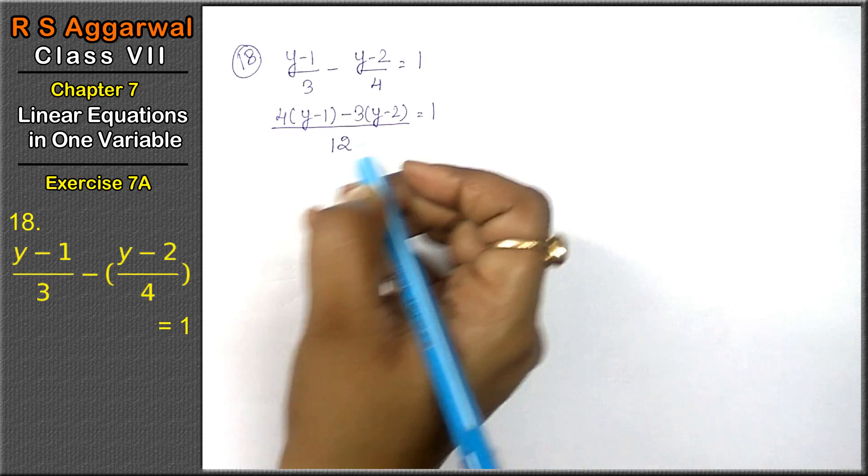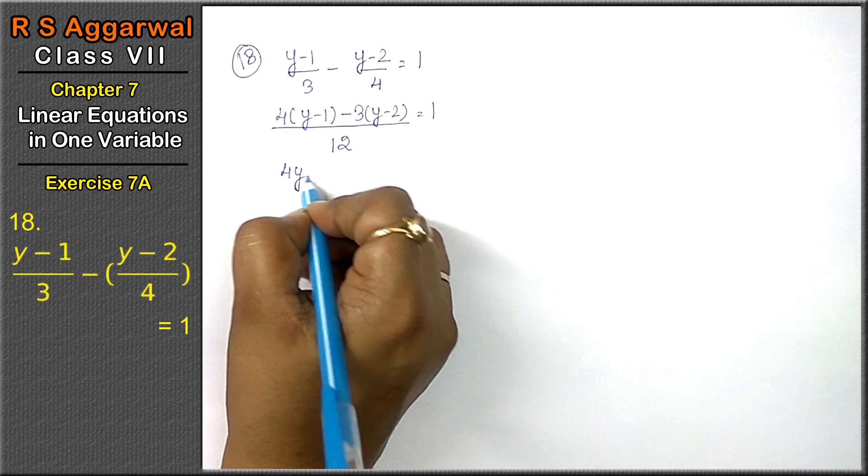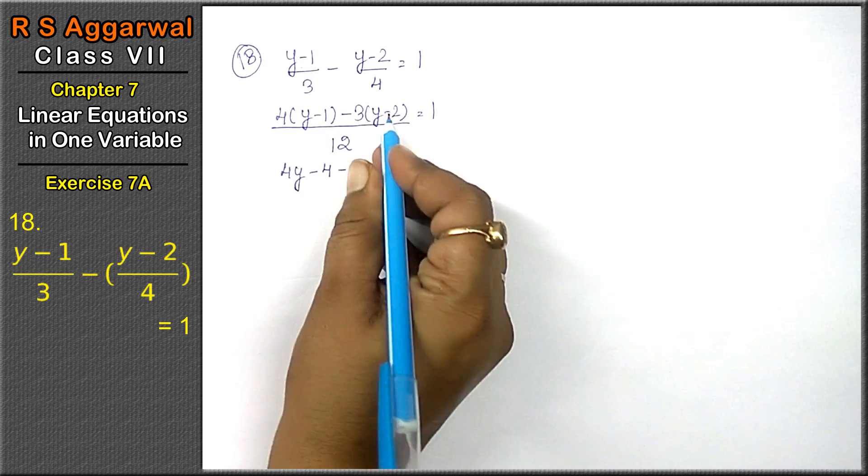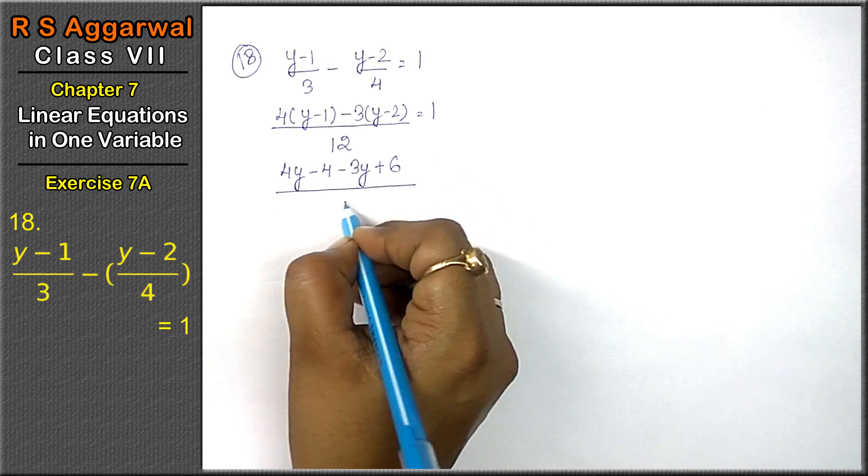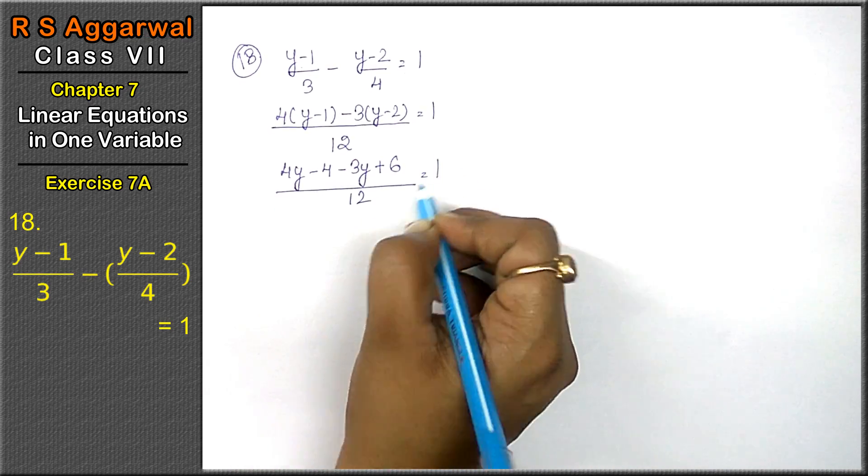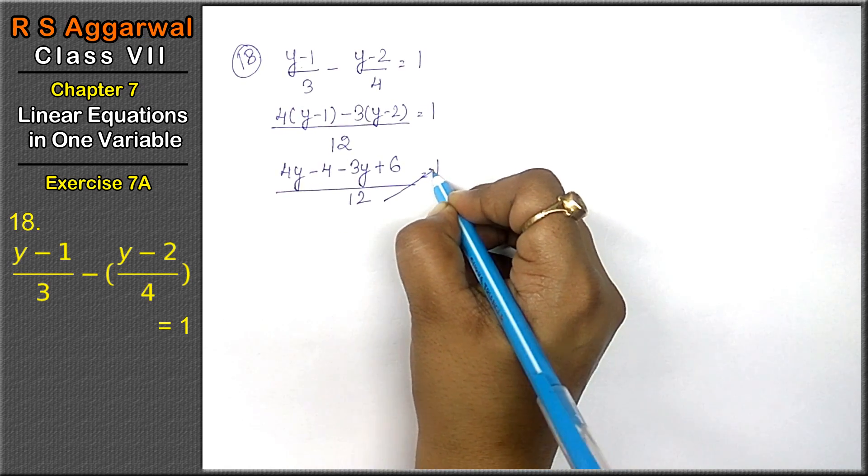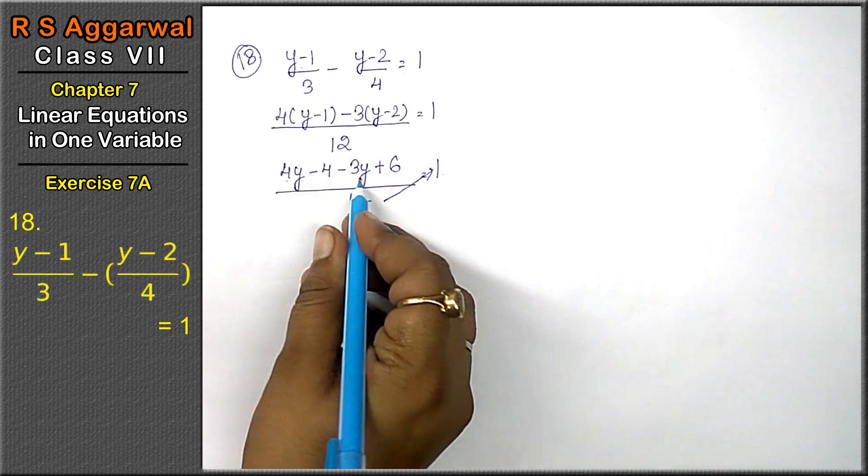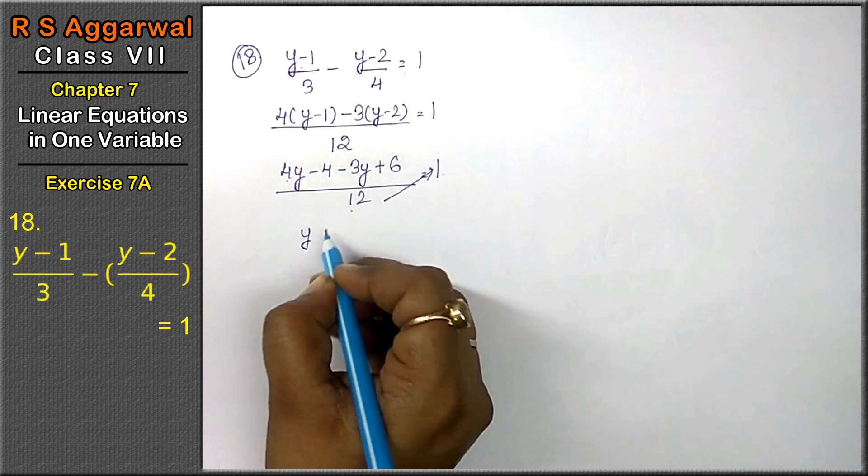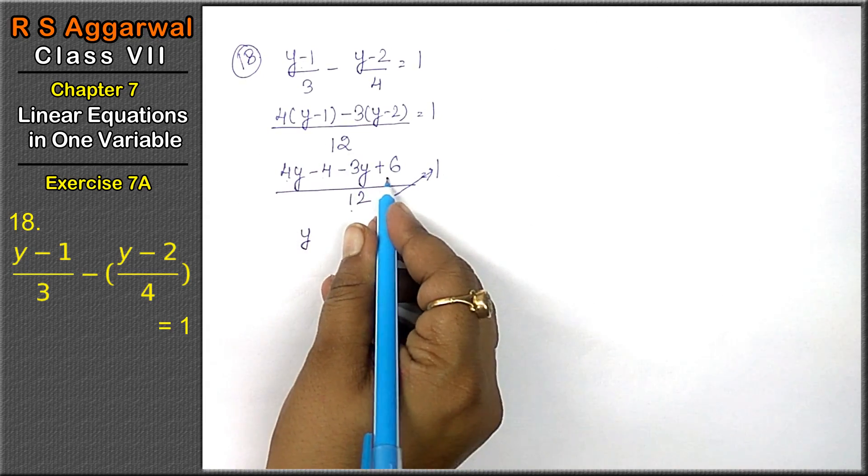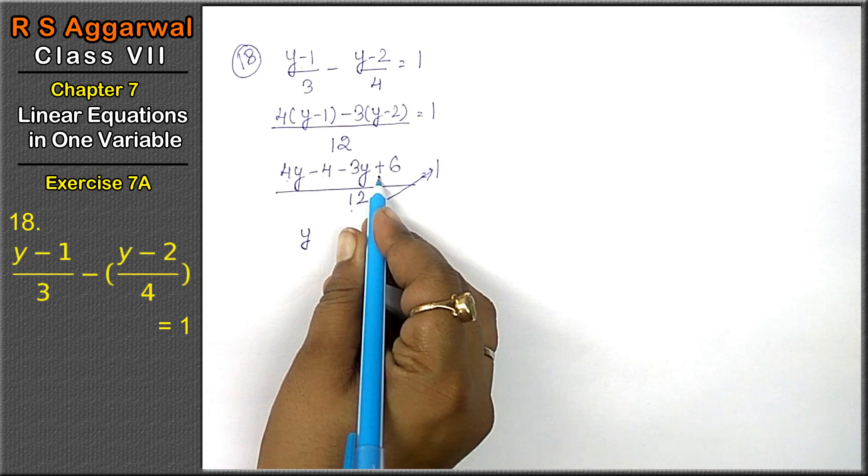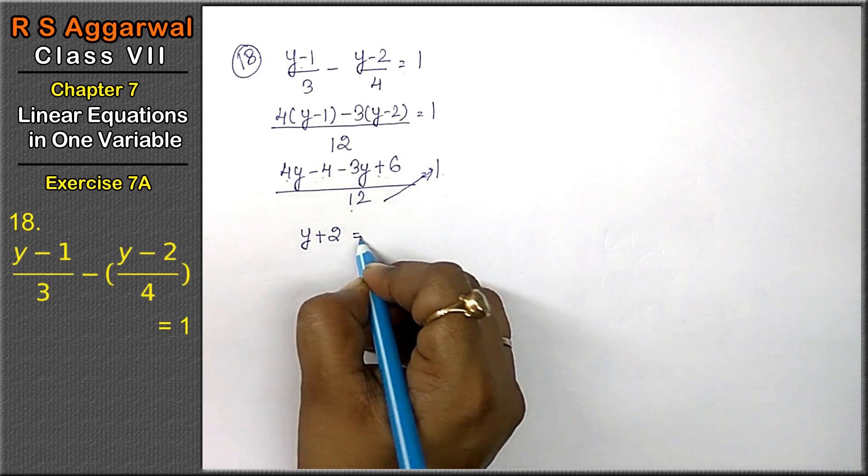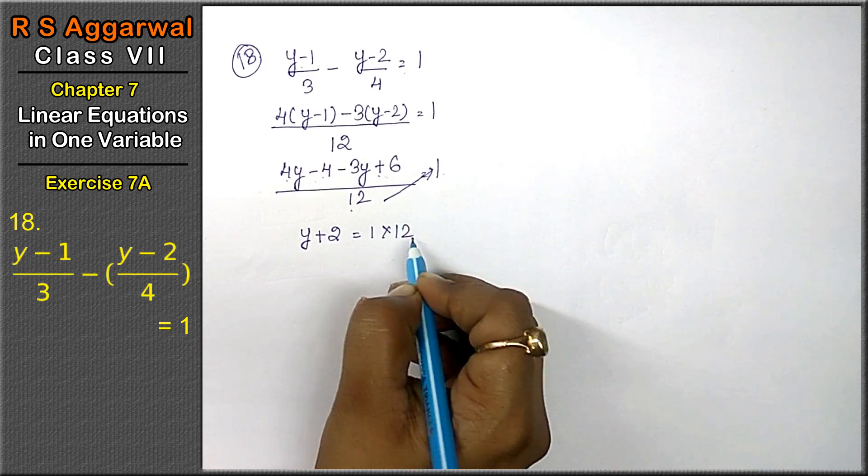4y - 4 - 3y + 6 upon 12 = 1. Friends, in the next step the numerator will be: 4y - 4 + 6 - 3y. The larger sign will be positive, so y + 2 = 1. Multiplying both sides: y + 2 = 12.